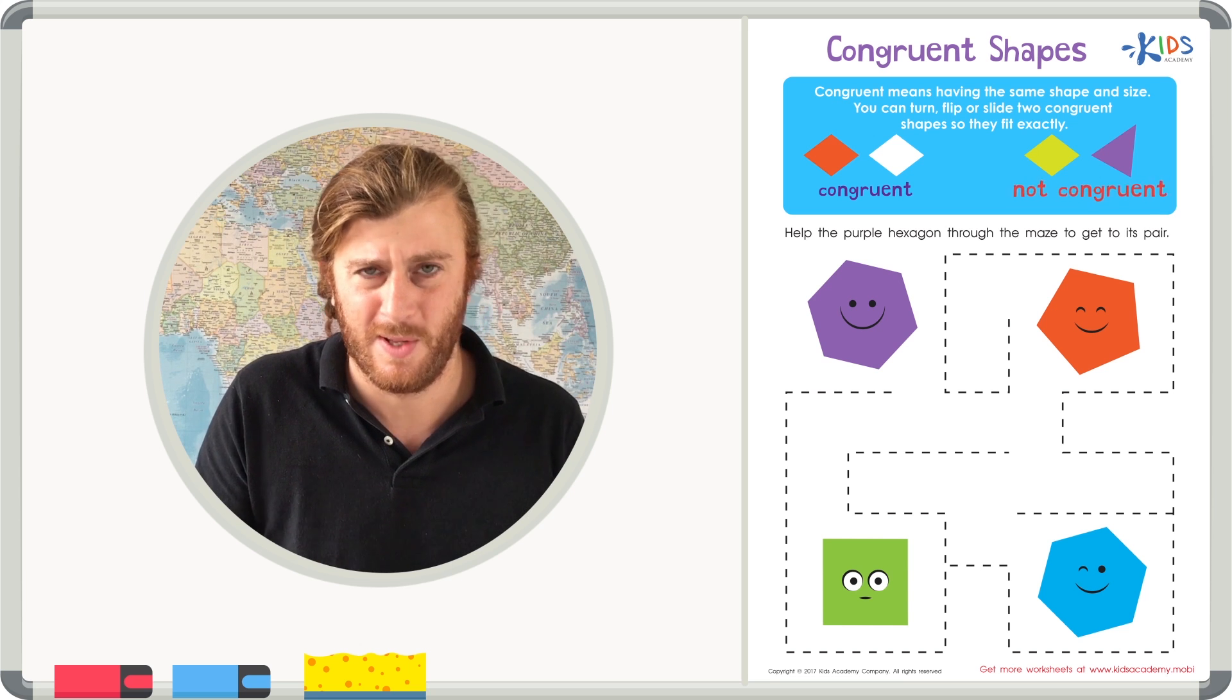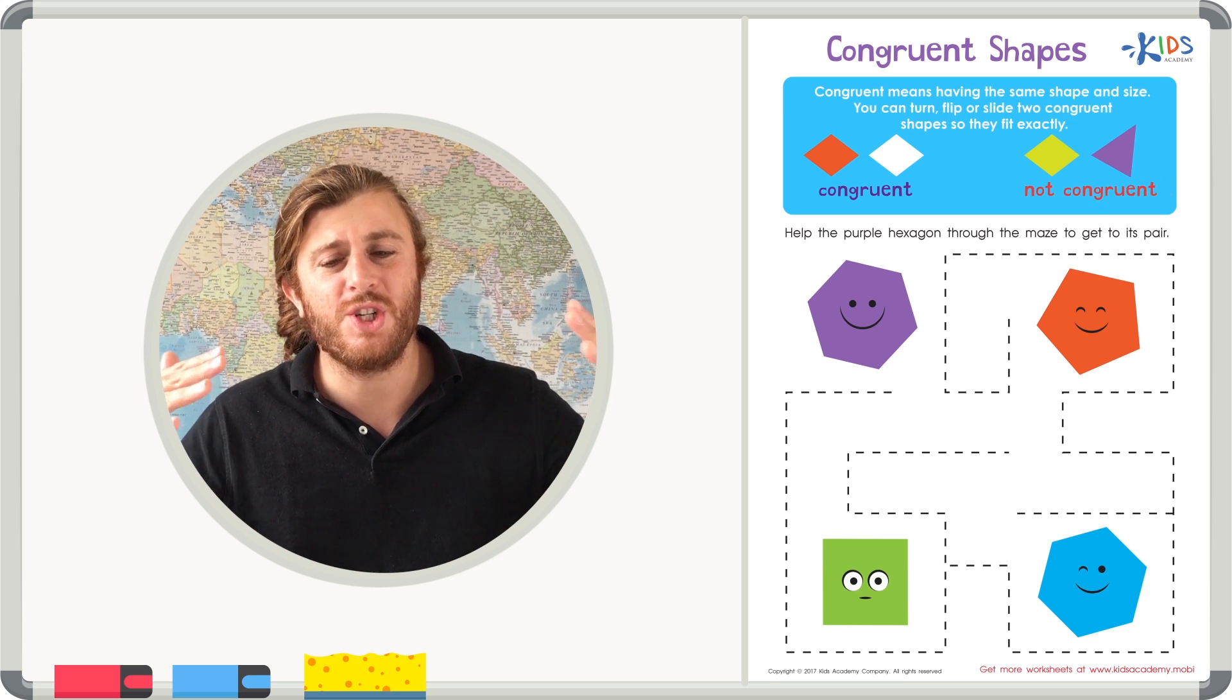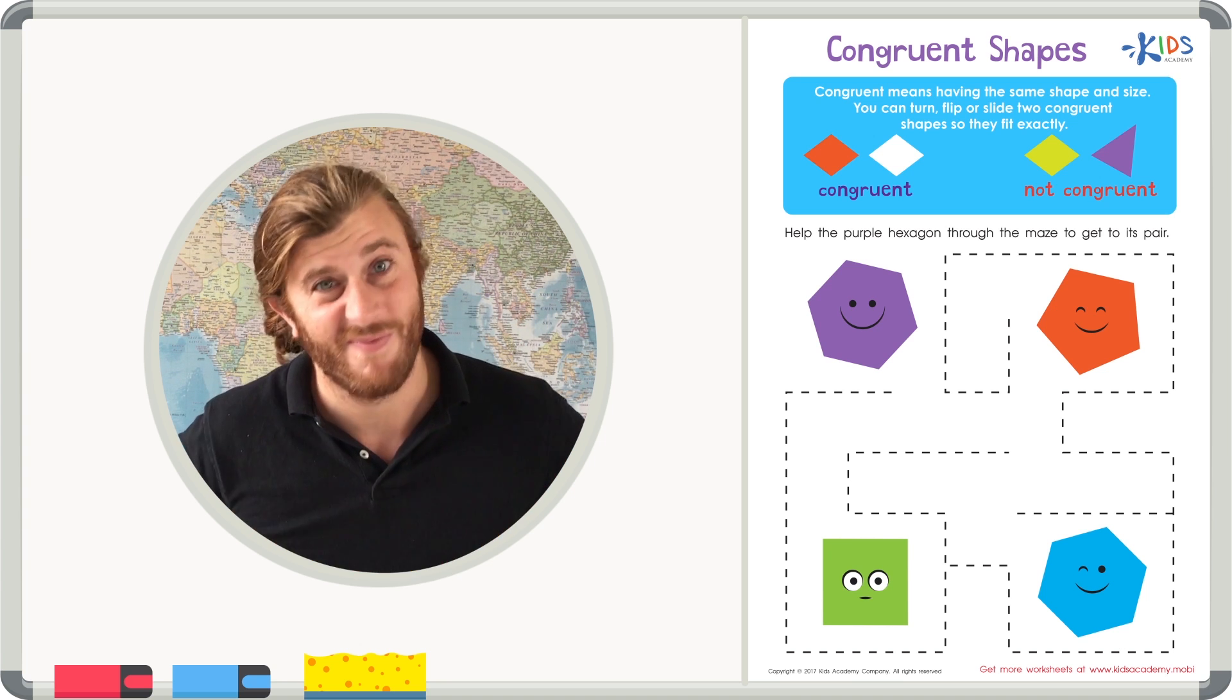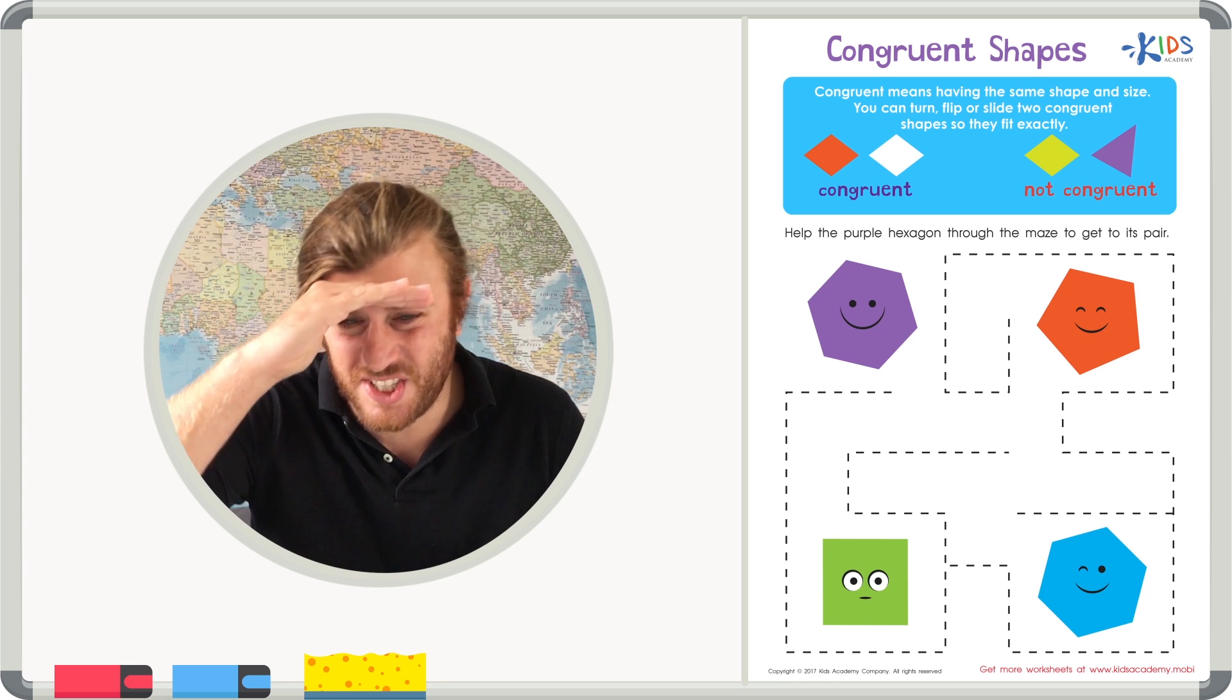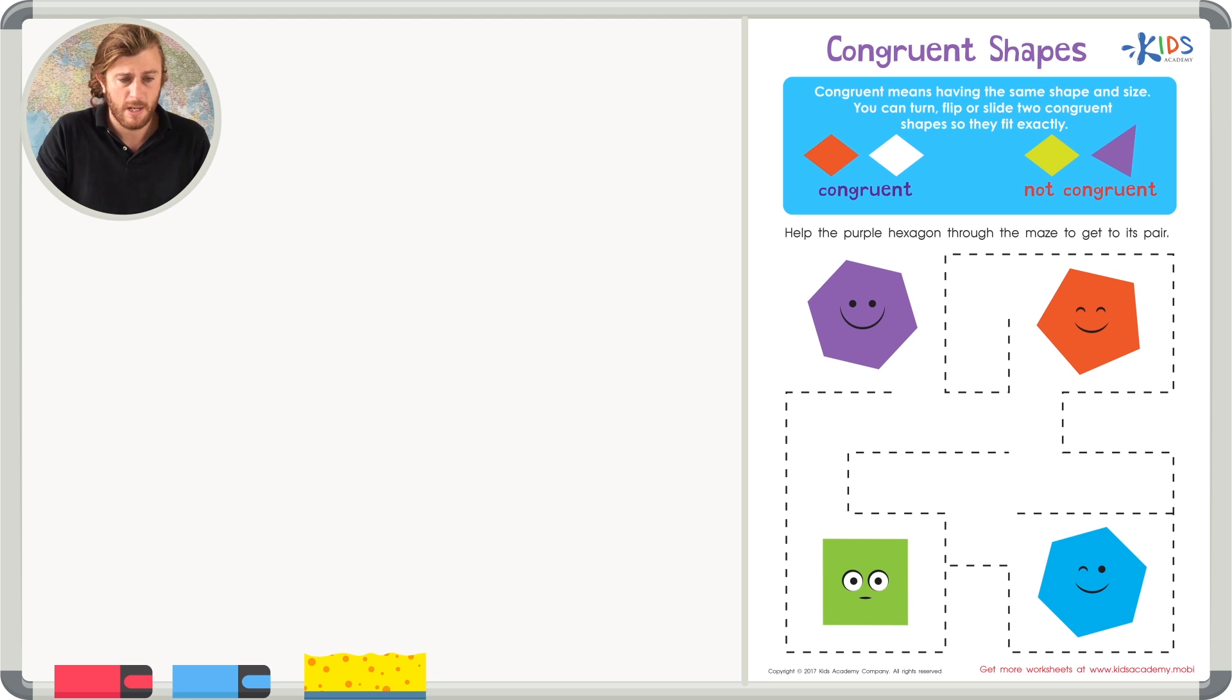If you look at this example of not congruent shapes, what if you put these shapes on top of each other? Are they going to match up perfectly? Not even close. Sometimes it's really easy to just see that you have two totally different shapes. For instance, a circle and a triangle could never be congruent.